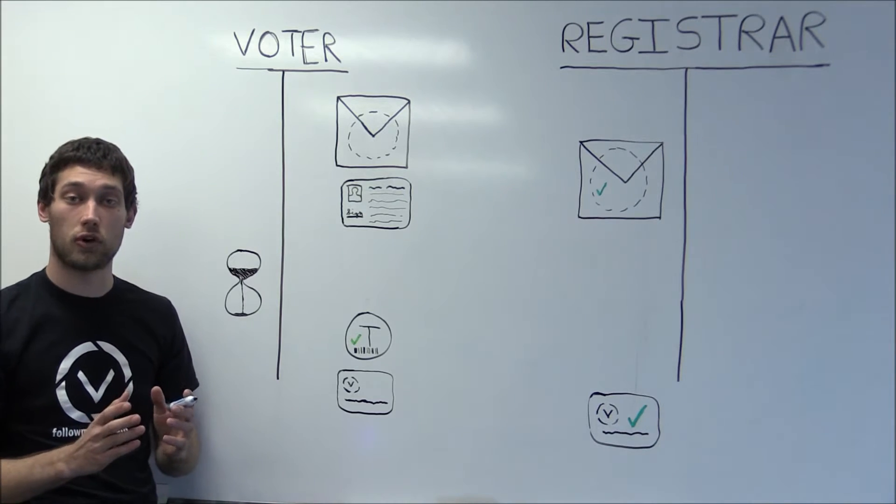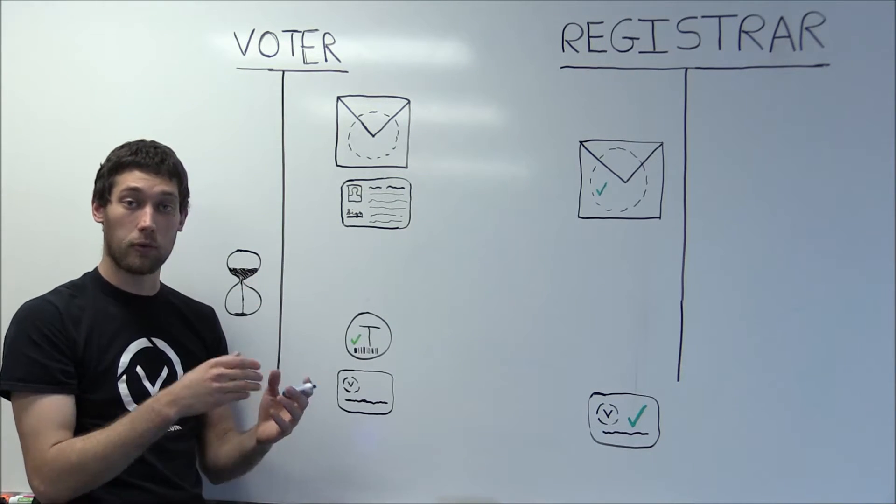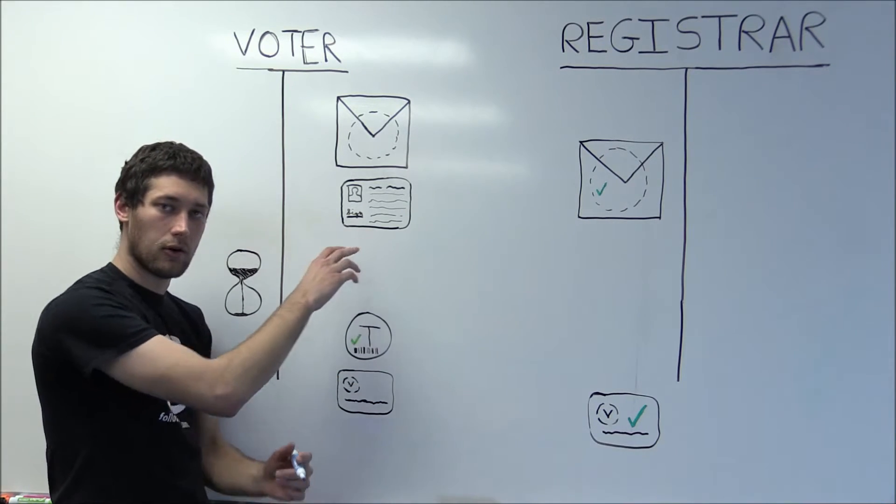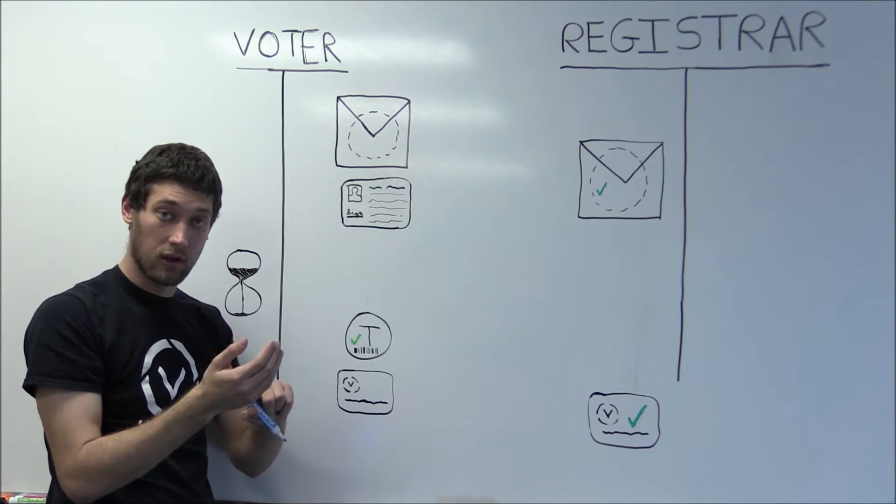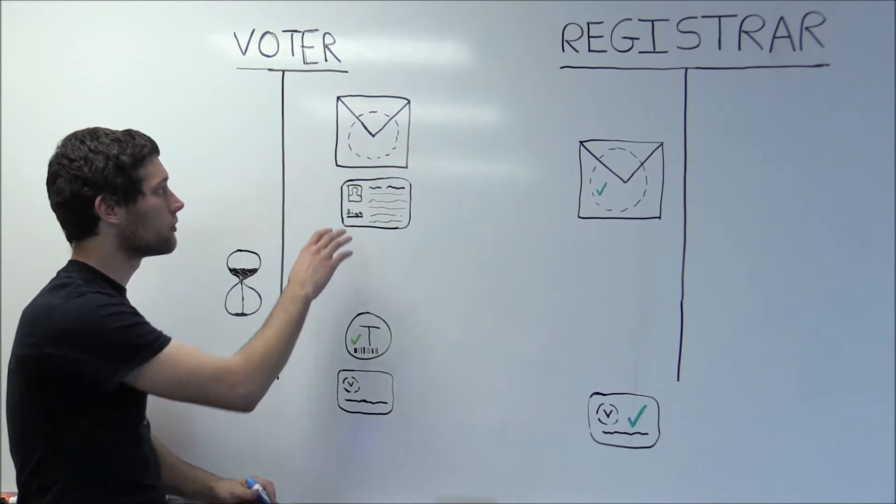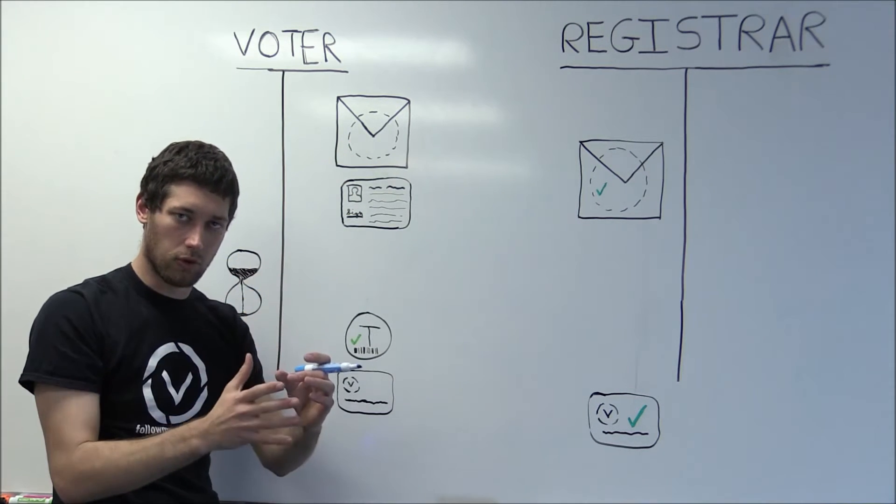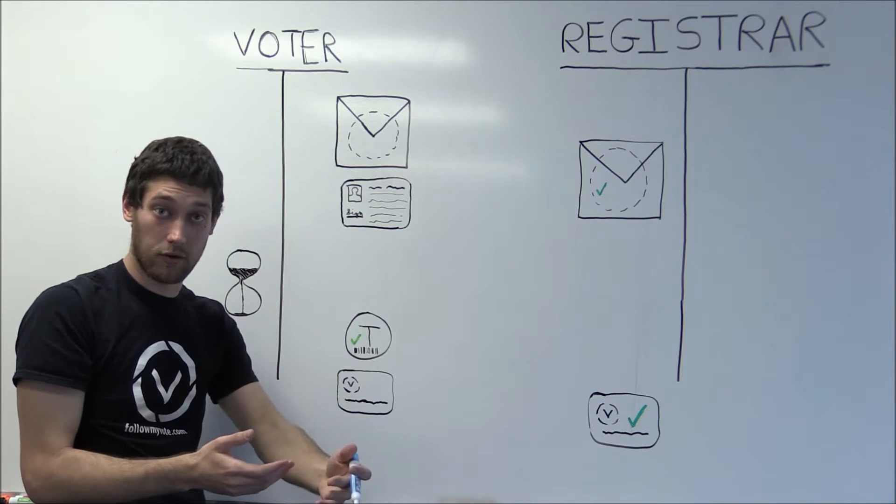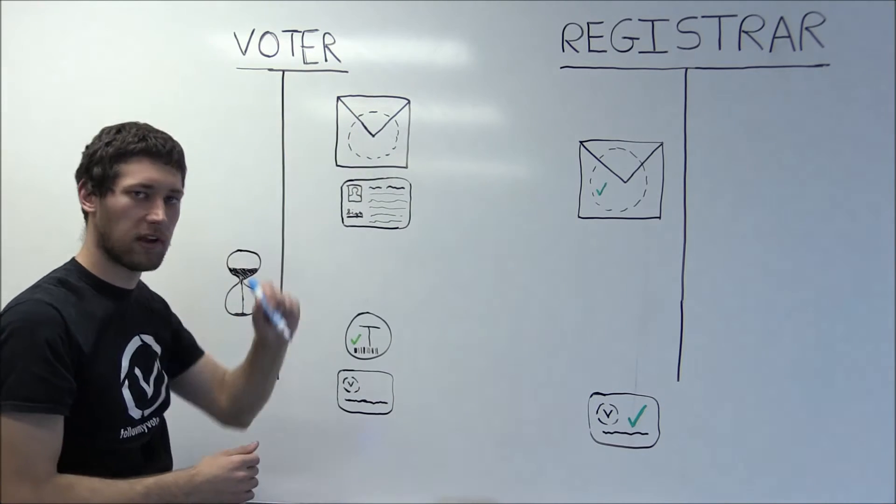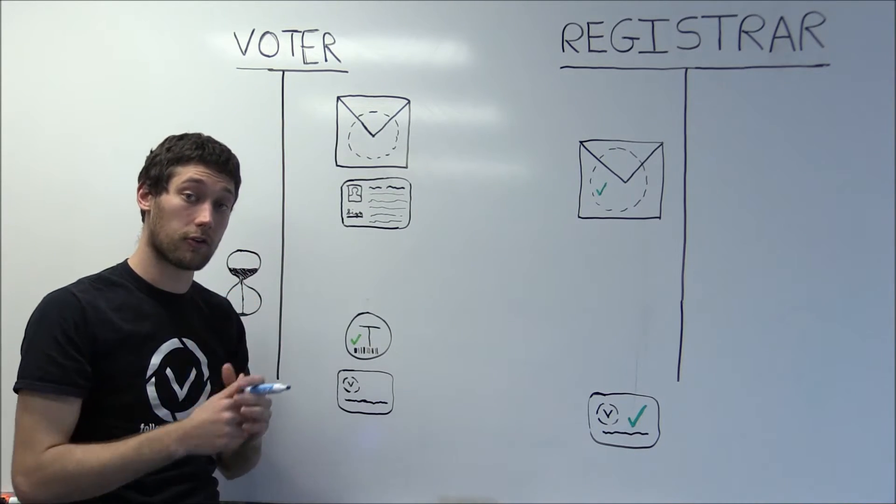At this point in the registration process, the voter has already created an account in our system and revealed his identity to an ID verifier who gives him an ID which is certified as unique and authorized to vote in this election. He also creates a blinded token, which is a random number that's been obscured so that it cannot be read directly. This is something akin to taking a token and sticking it into a carbon copy envelope so that a signature on the envelope will be imprinted onto the token inside.